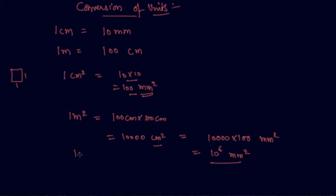So 1 meter squared equals 10 to the power 4 centimeters squared, which equals 10 to the power 6 millimeters squared.